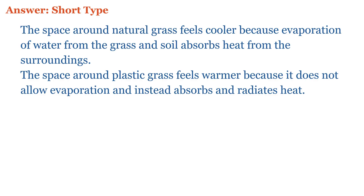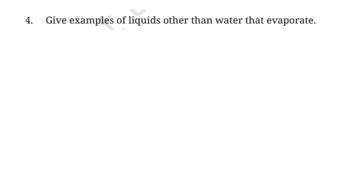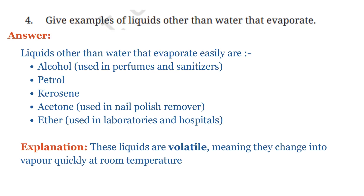Students, I hope you have understood it clearly. If you still have any doubts, go through the explanation once more. I'm sure everything will become crystal clear like water. Question number four: give examples of liquids other than water that evaporate. Liquids other than water that evaporate easily are alcohol (used in perfumes and sanitizers), petrol, kerosene, acetone (used in nail polish remover), and ether (used in laboratories and hospitals). These liquids are volatile, meaning they change into vapor quickly at room temperature.